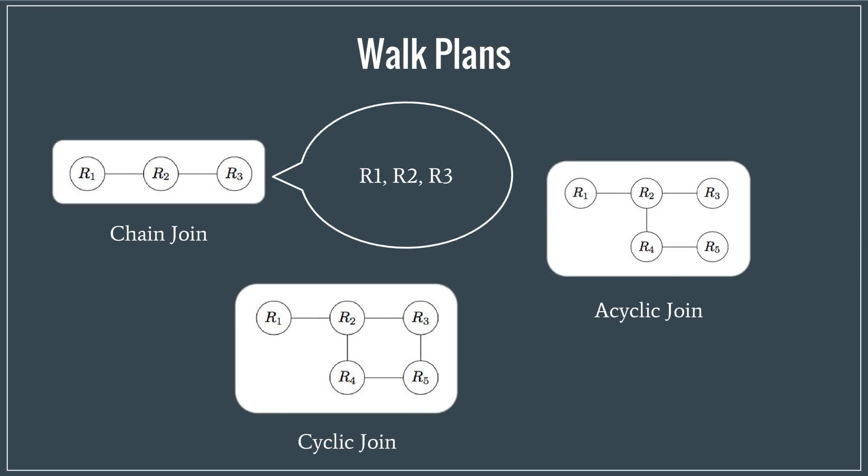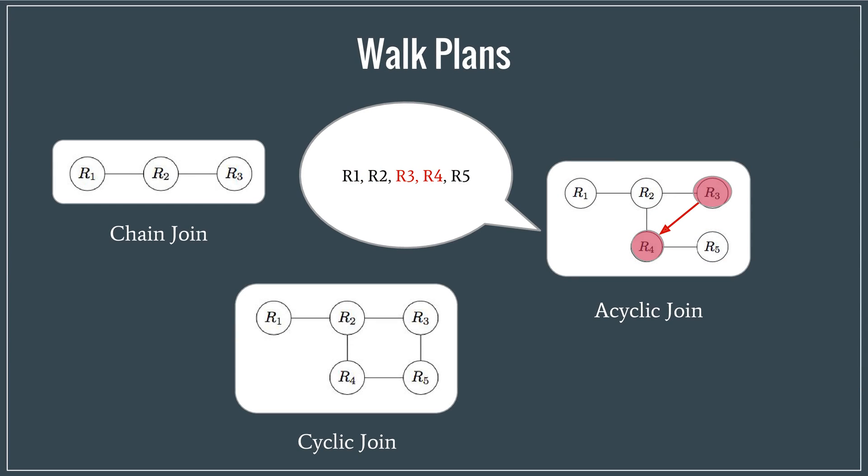The example we looked at was a chain joint whose walking order is simply R1, R2, R3. And for a complex acyclic join, the random walk may now consist of both walks and jumps. And for the jumps to be successful, R2 must appear before R4 in this walk plan.